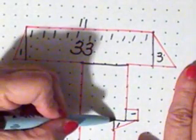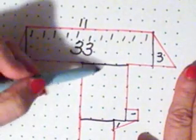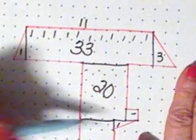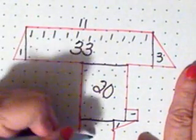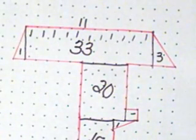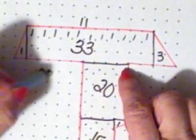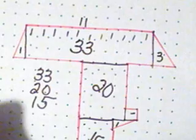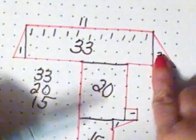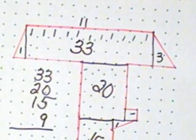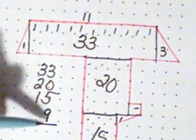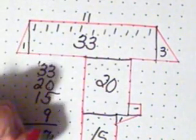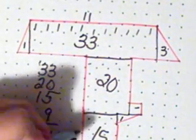Now I'm going to plug in this, which would be one, two, three, four by one, two, three, four, five — or 20. This one is one, two, three by one, two, three, four, five — which is 15. So now all I have to do is add: 33 plus 20 plus 15. Then I add up all my little ones: three, four, five, and three is eight, and one is nine. So three and five is eight, and nine is 17; three and three is six, and one is seven. So this figure is 77 units squared.